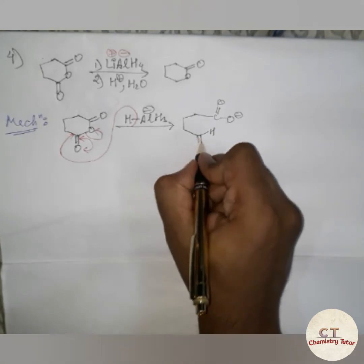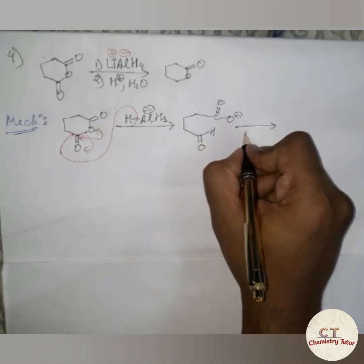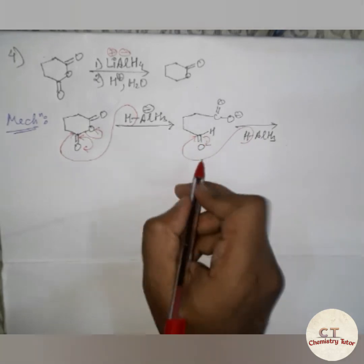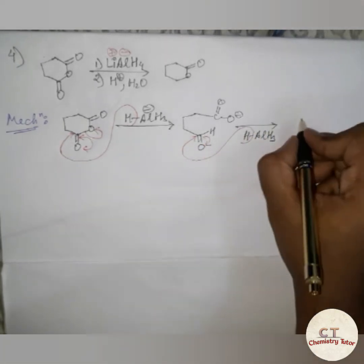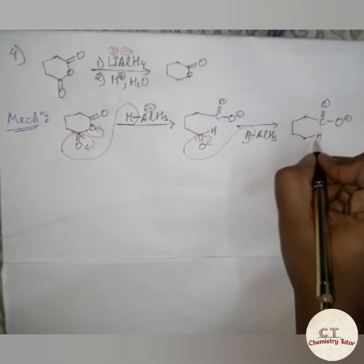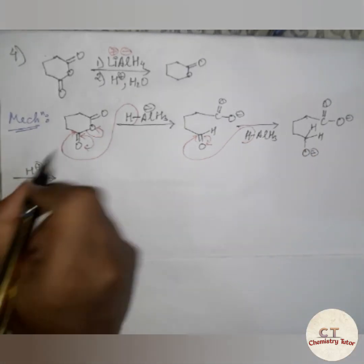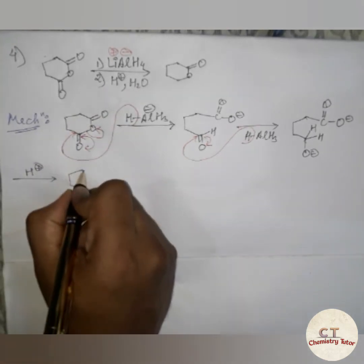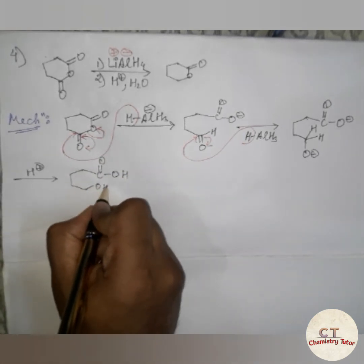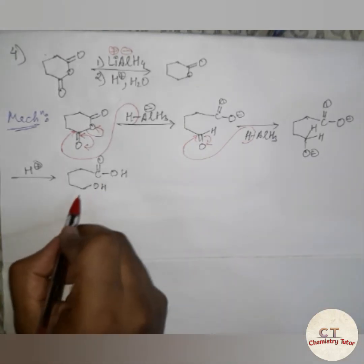Since the hydride has attacked, the product does not stop at the aldehyde — it will further reduce to form an alcohol. Again, the hydride attacks, the negative charge comes to the oxygen atom. Since H⁺ is given in the second step along with H₂O, the O⁻ will abstract a proton to form COOH in one case and OH in the other, abstracting a proton from the solution.